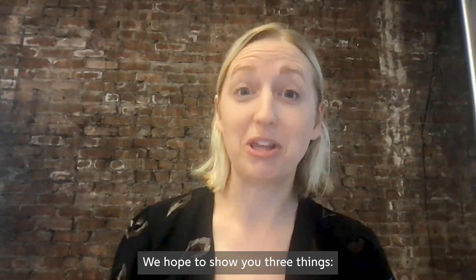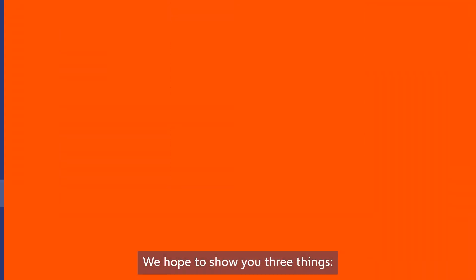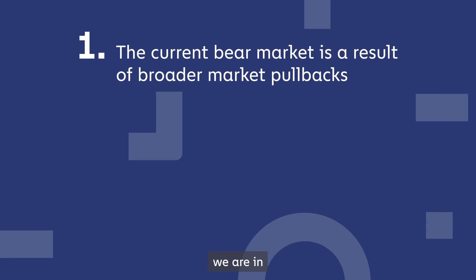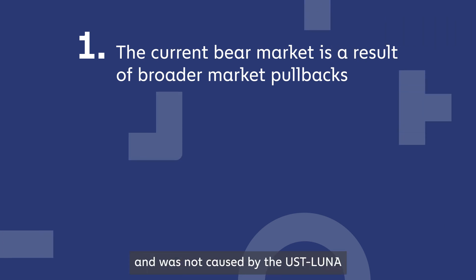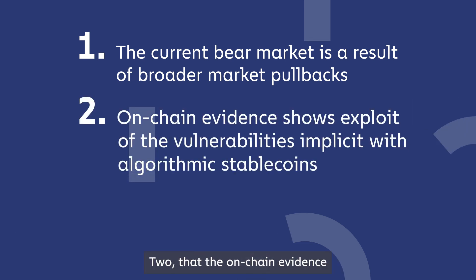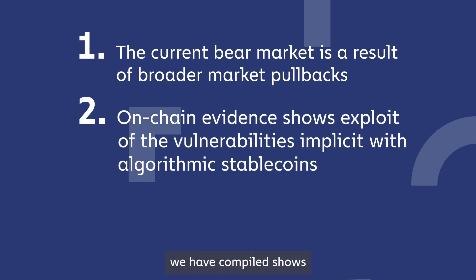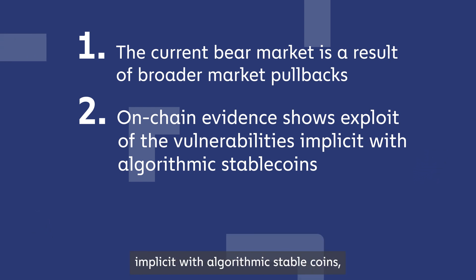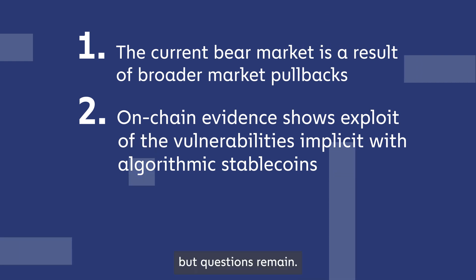We hope to show you three things. First, that the current bear market we are in is the result of broader market pullbacks and was not caused by the UST Luna collapse alone. Second, that the on-chain evidence we have compiled shows a potentially coordinated plan to exploit the vulnerabilities implicit with algorithmic stablecoins, but questions remain.